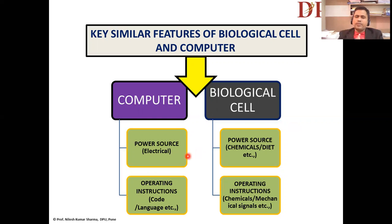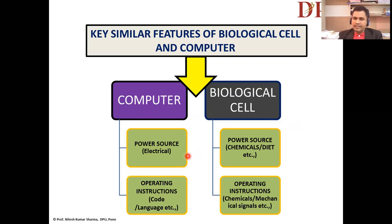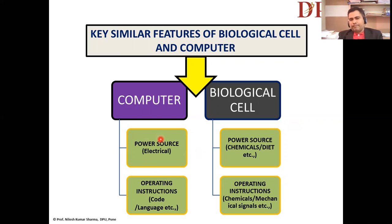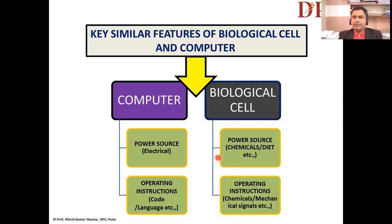Another important point: both systems need inputs and power. In the case of the computer, it needs an electrical source. The biological cell also needs power sources in the form of various chemical structures — it can be diet, drugs, or many more.